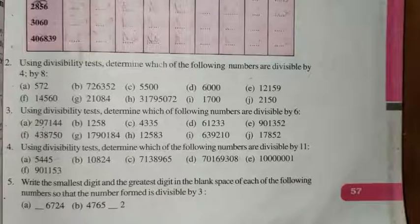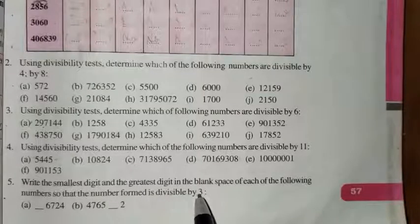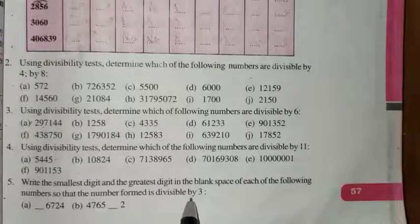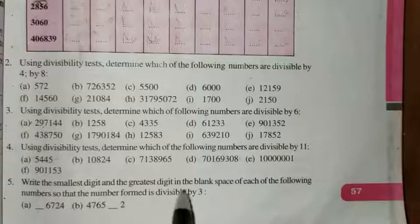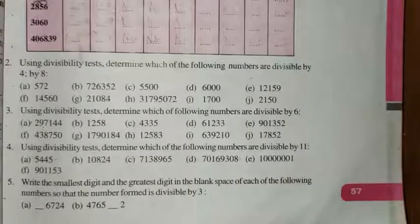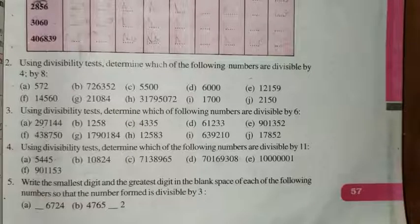Hello dear student, now we are in question number 5. Write the smallest digit and the greatest digit in the blank space of each of the following numbers so that the number formed is divisible by 3. The divisibility test of 3 is important, which you already learned. We have to find the missing smallest and greatest digit in the blank space. Your concept should be clear about the divisibility criteria of 3. Let's get started with the solution of A and B.